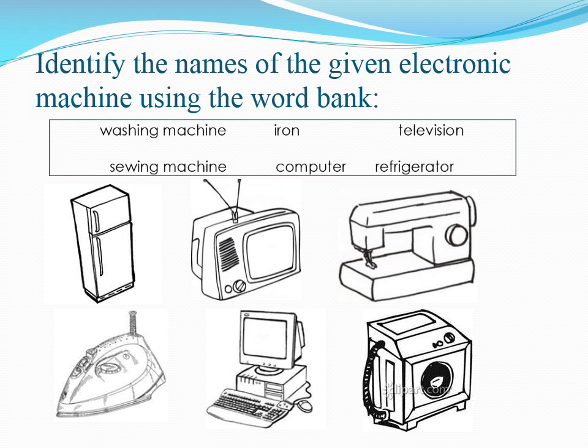Very good! Now, let's review the names. The first one is Refrigerator. Very good! And the others are: Television, Sewing Machine, Iron, Computer, and Washing Machine. Again: Refrigerator, Television, Sewing Machine, Iron, Computer, and Washing Machine.